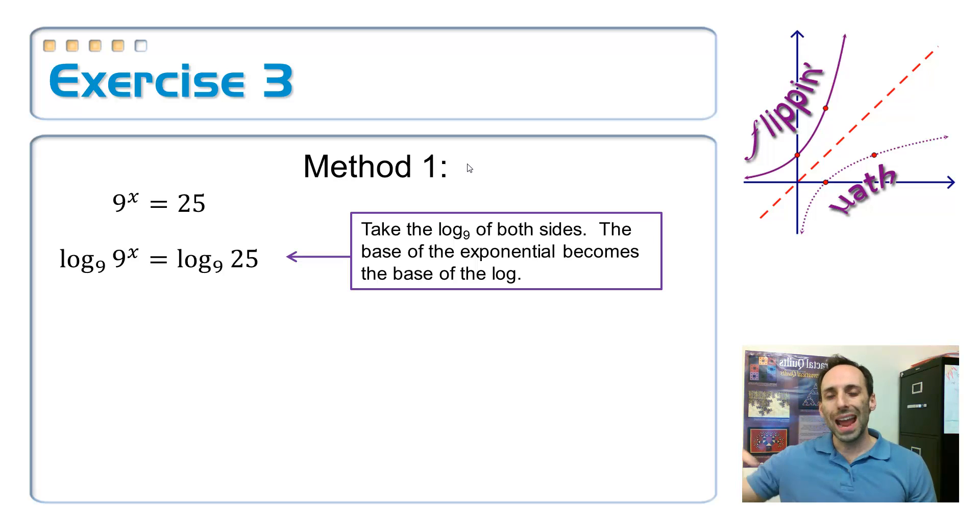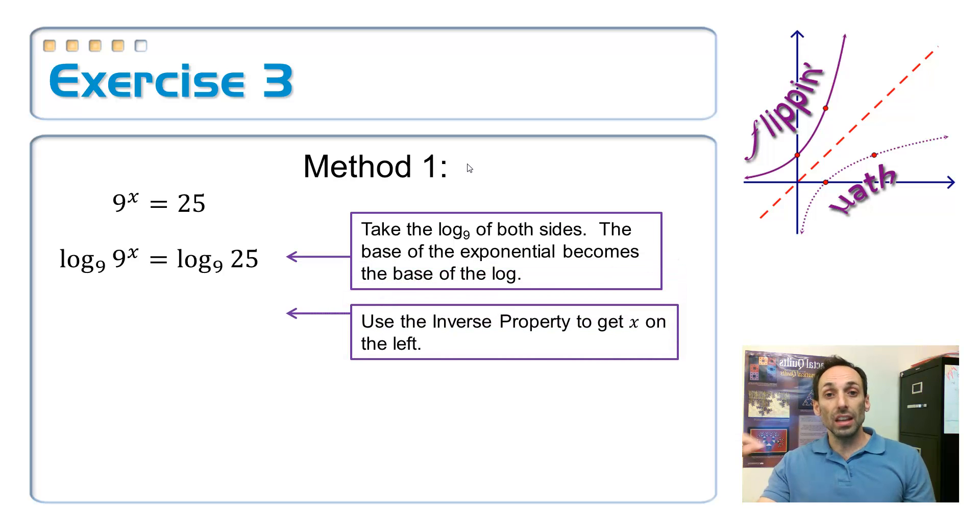Now, what happens to the quantity over there on the left-hand side? It cancels out. So, it's inverse, right? So, it just gives me x back, and then I have the log base 9 of 25. If I had a calculator that evaluated base 9, then I'd pretty much be done. I could just put this in the calculator, and I'd be done.